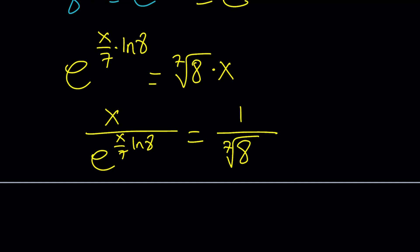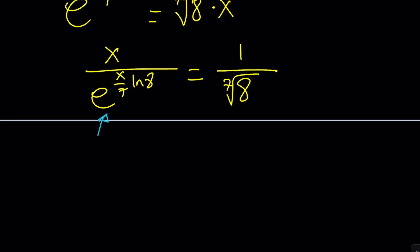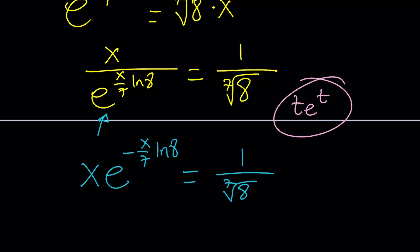Now, this expression at the bottom can be written with a negative exponent. So we can bring it up top: x e to the power negative x over 7 ln 8 equals 1 over 7th root of 8. Notice that this is actually getting closer to the form that I wanted in te to the t. We're almost there.